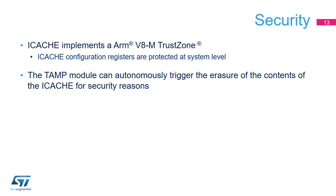iCache implements the ARM V8M TrustZone. iCache registers are protected at system level, enabling only secure software to access them when TrustZone is enabled. The TAMP module can autonomously trigger the erasure of the contents of the iCache for security reasons.